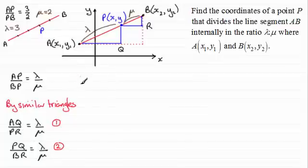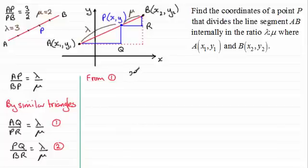So first of all then, I'm going to look at equation one. I see that AQ will be x minus x₁, so we've got x minus x₁. And then we divide this by PR, and PR, that distance there, will be x₂ minus x, so we've got x₂ minus x. And we can see that that equals lambda divided by mu.